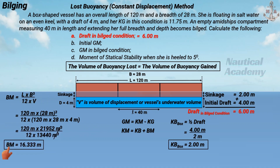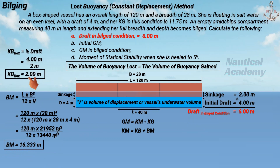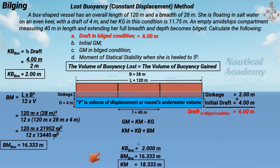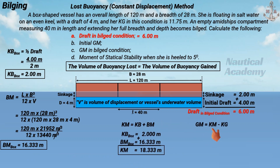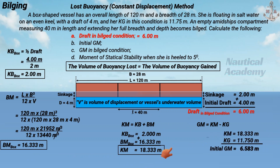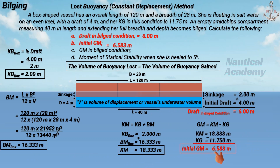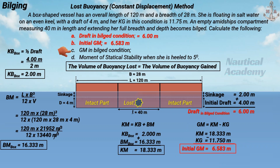The value of BM is 16.333 meters. Adding KB and BM, the KM in this scenario is 18.333 meters. Subtracting the initial KG of 11.75 meters from KM, the initial metacentric height is positive 6.583 meters.